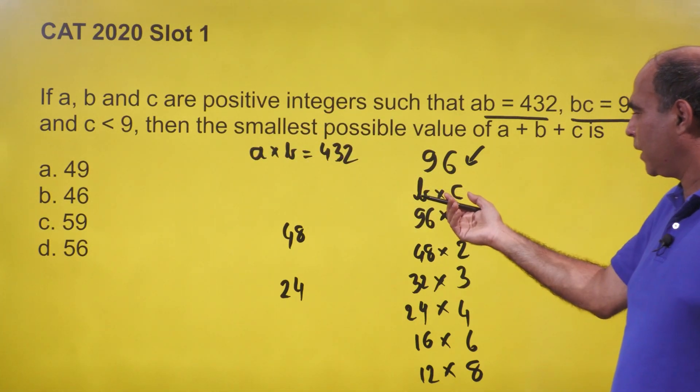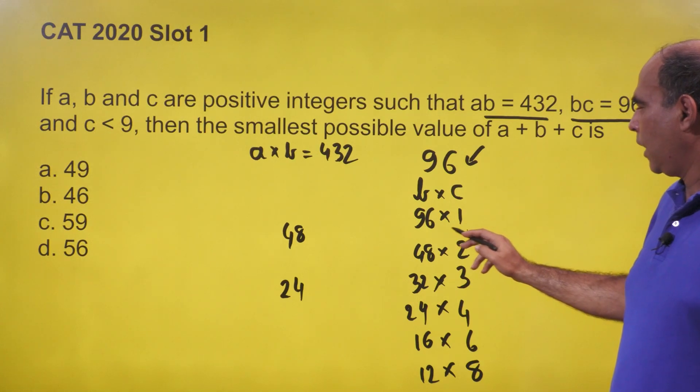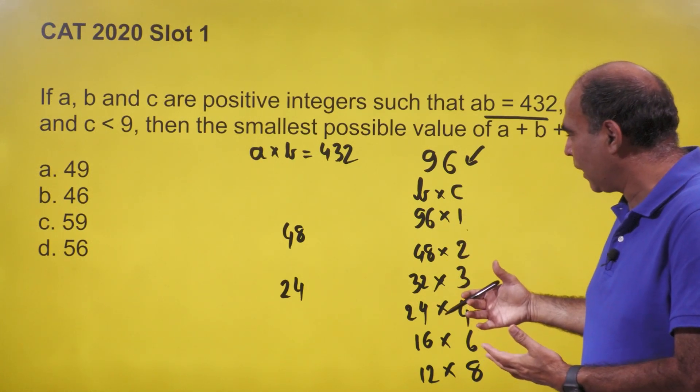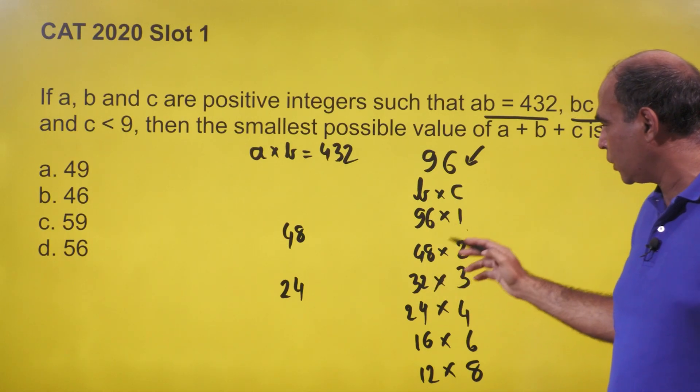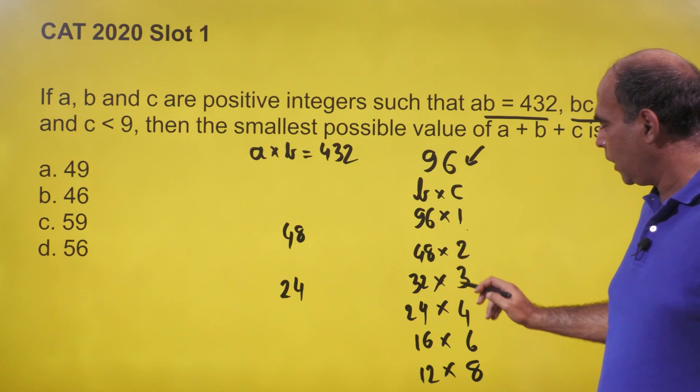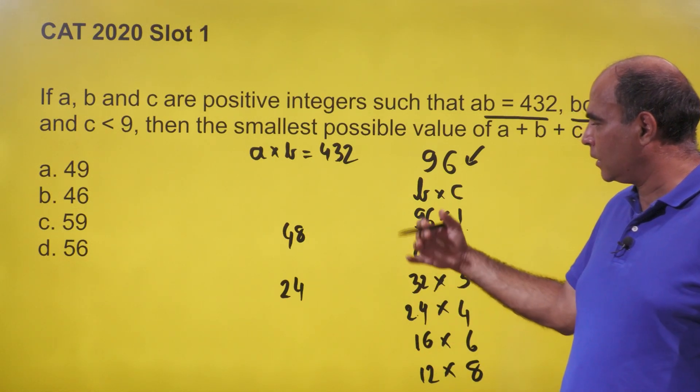Since these are positive integers, we can find the factor pairs. It should take around 15 seconds - if you're taking more than that, please improve your calculations. The factor pairs of 96 are: 1×96, 2×48, 3×32, 4×24, 6×16, and 8×12. These are the possibilities for b and c.